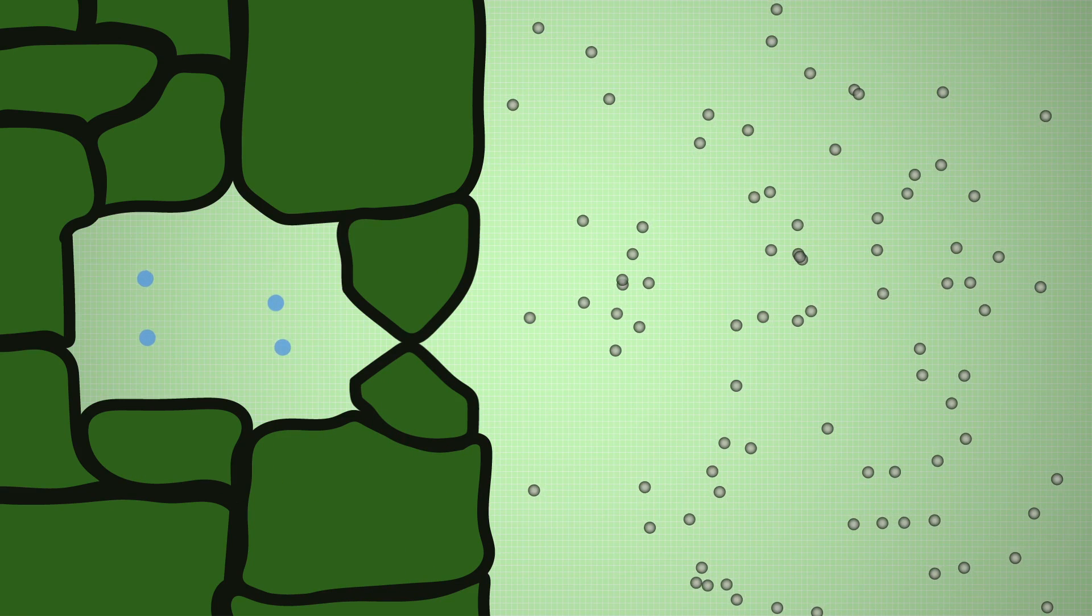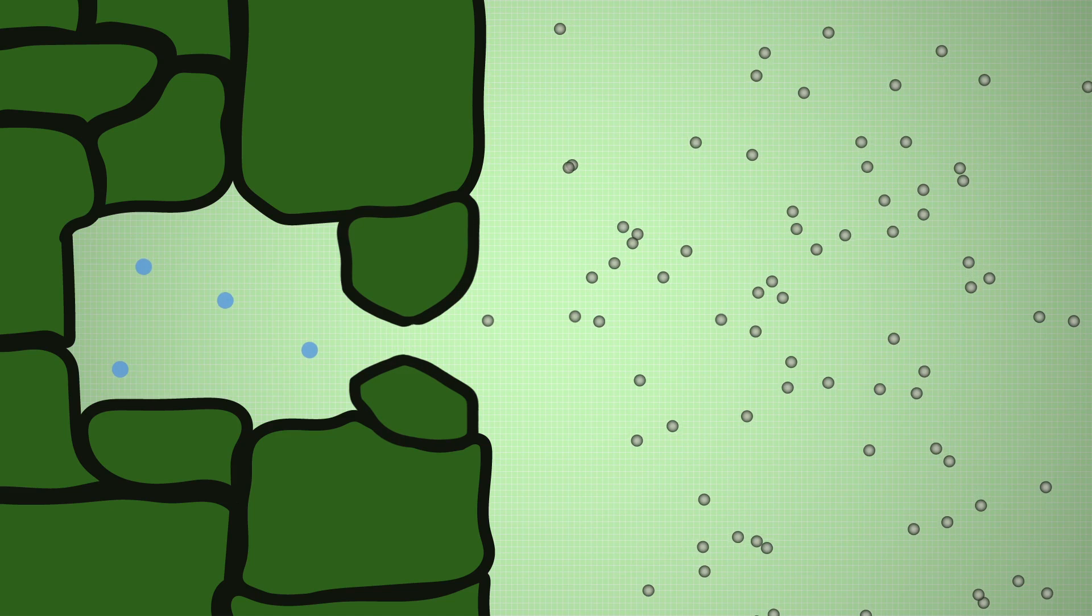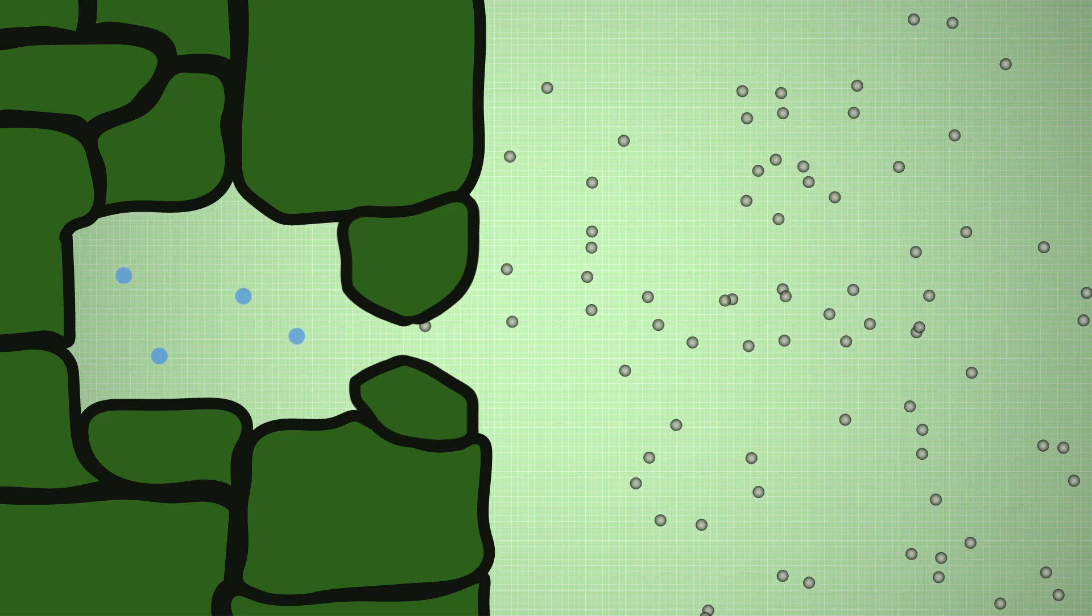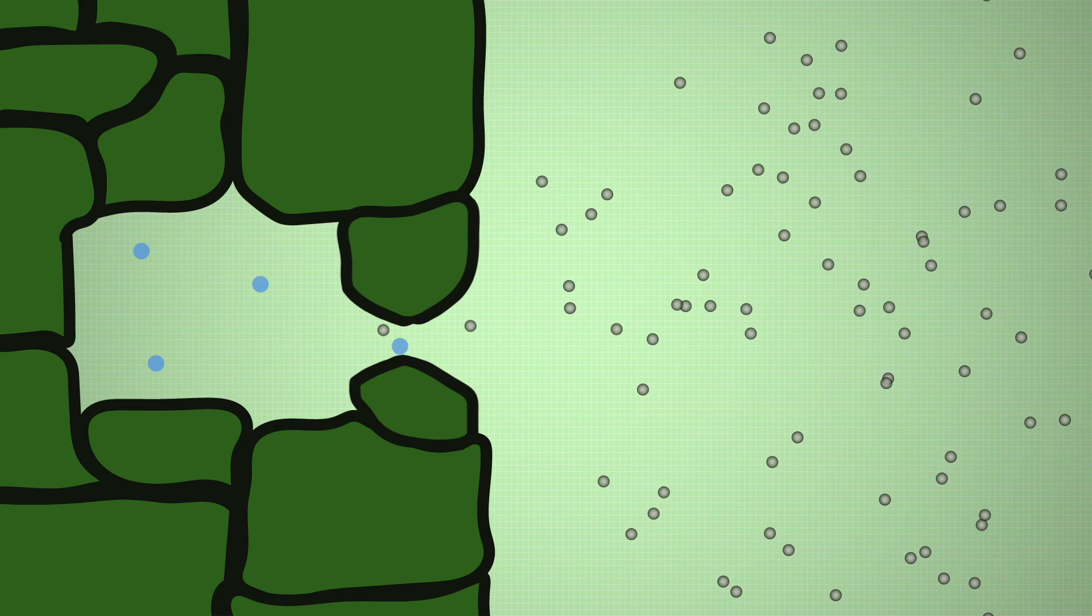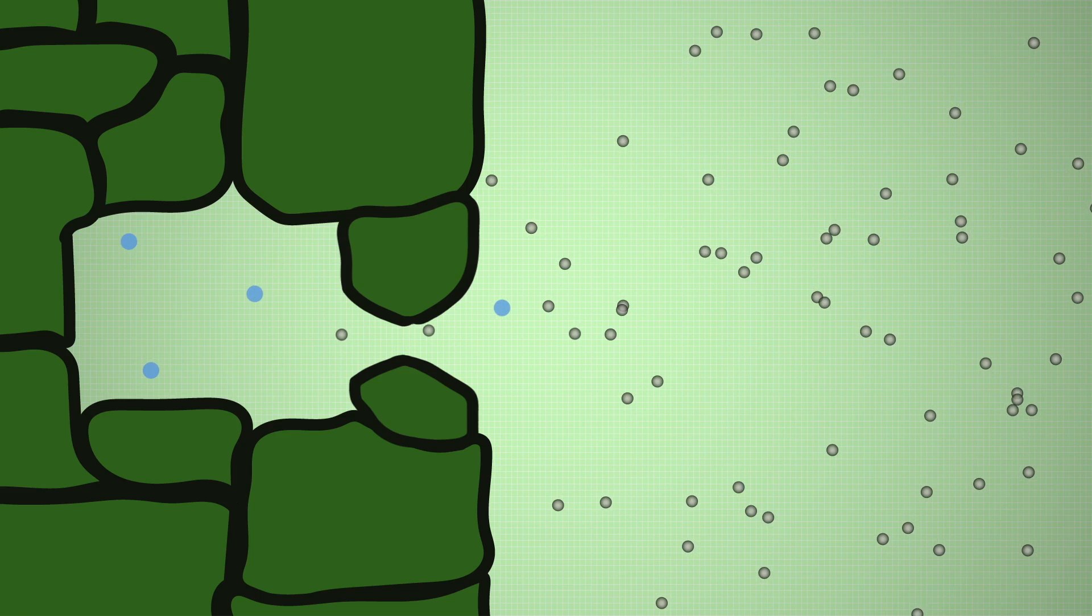So the way that plants breathe is to open small pores in their leaves called stomata. When they are open, carbon dioxide can enter the leaf. The problem for plants is that their hard-earned water can now be lost through these open pores.